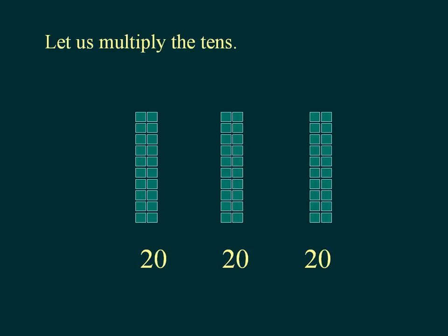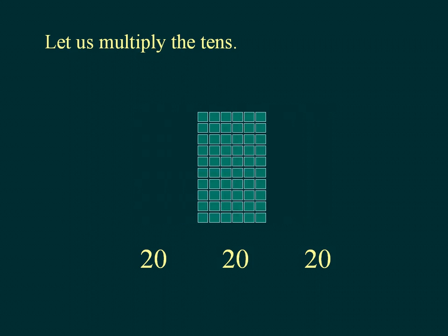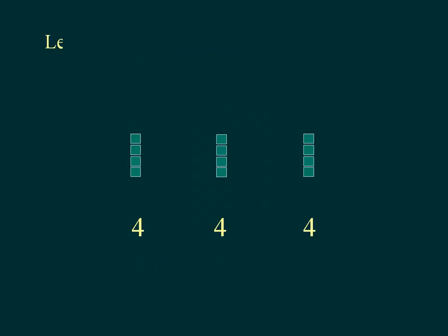Let us multiply the tens. We know from the tables that 2 multiplied by 3 is equal to 6. 3 multiplied by 4 is equal to 12.